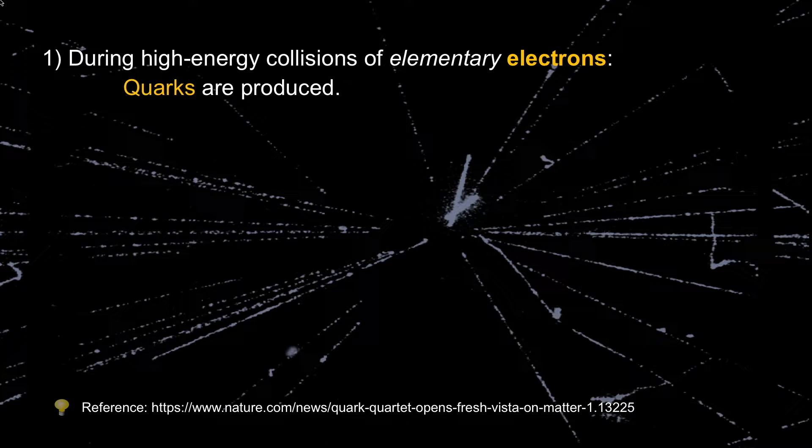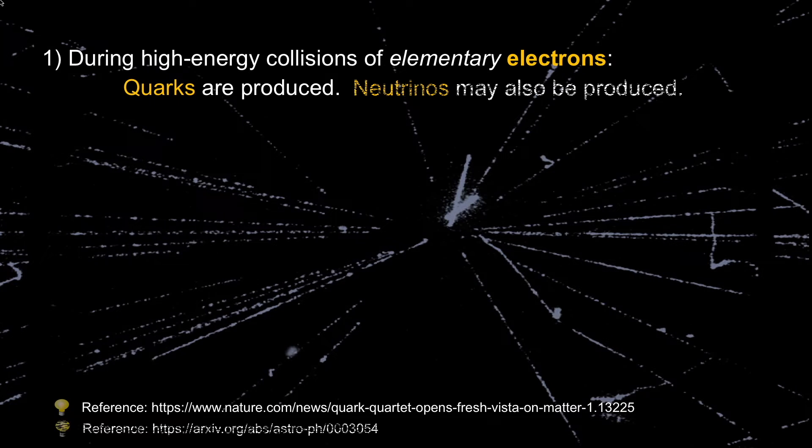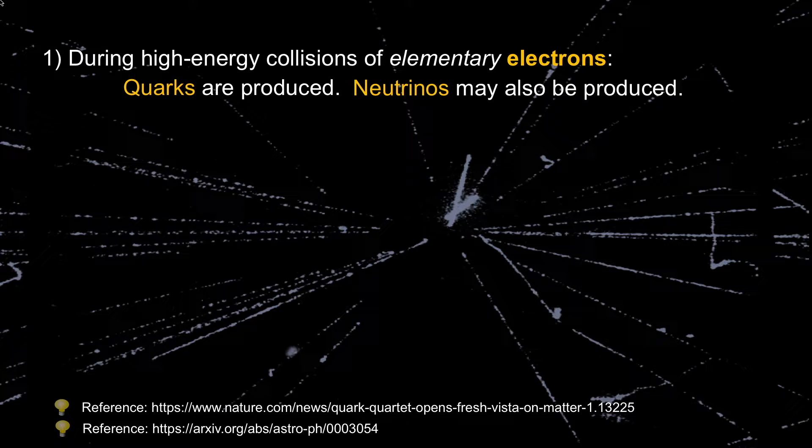During high energy collisions of elementary electrons, quarks have been spotted. Not only quarks produced, but also neutrinos have been witnessed from these collisions of electrons. These are supposed to be elementary particles. So how are quarks and neutrinos produced from electrons?